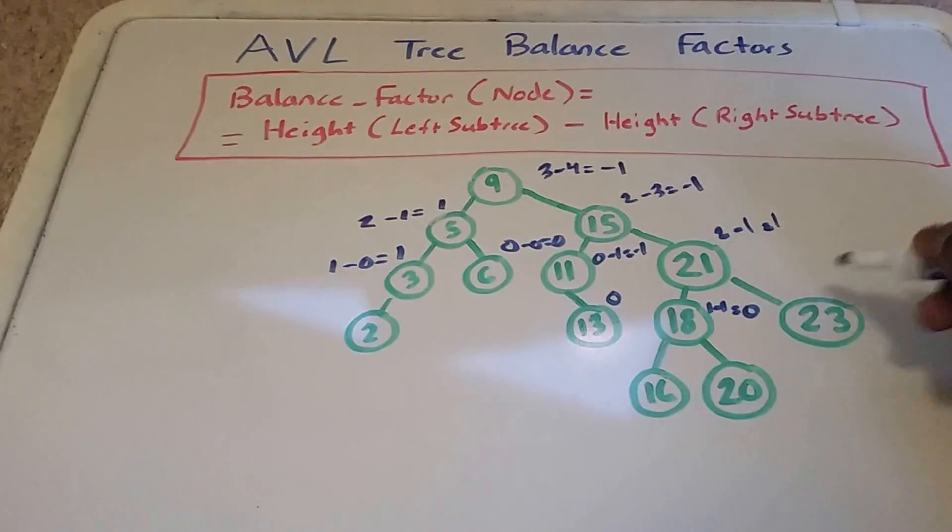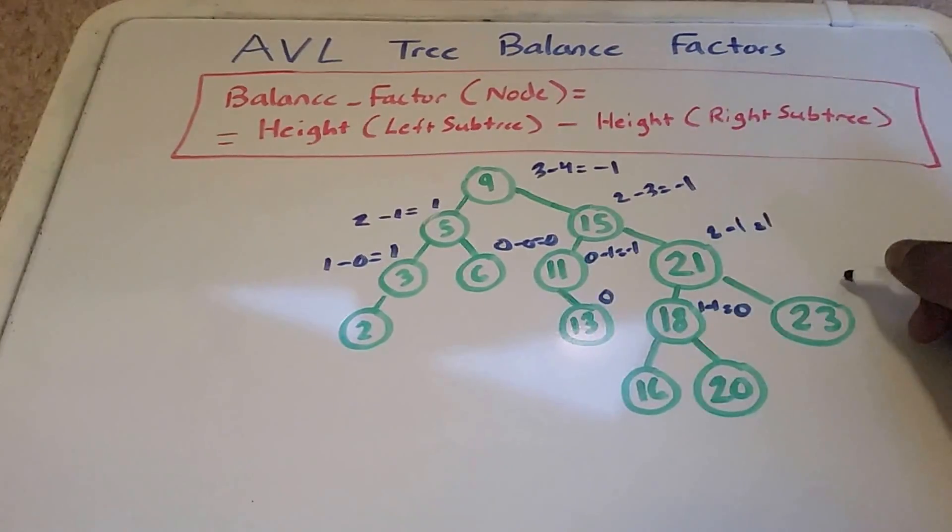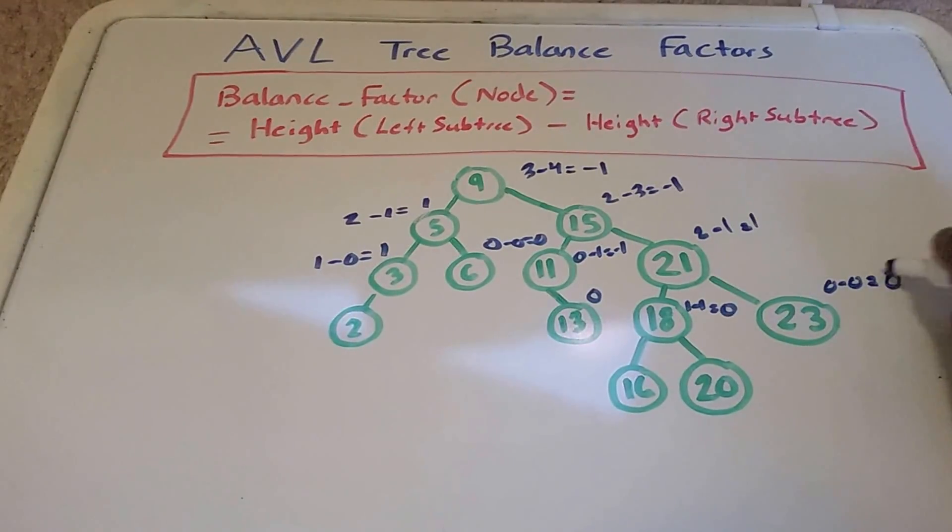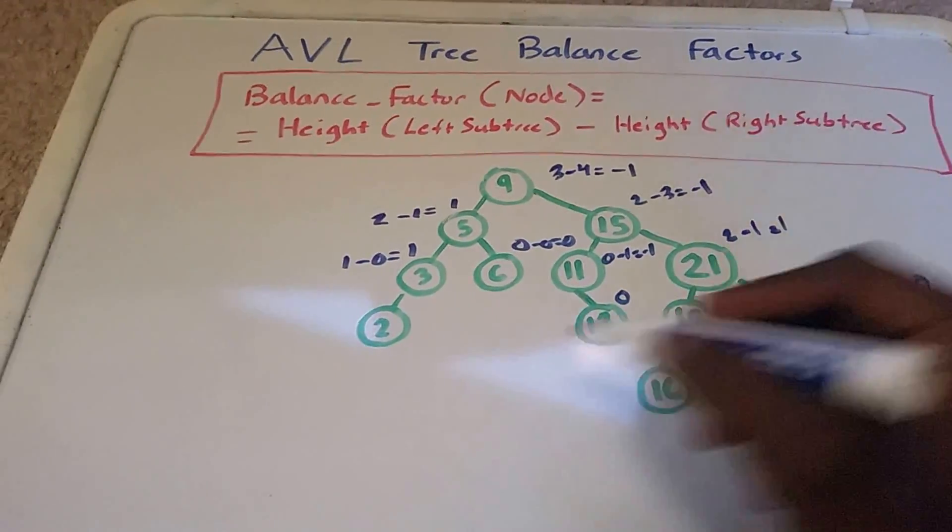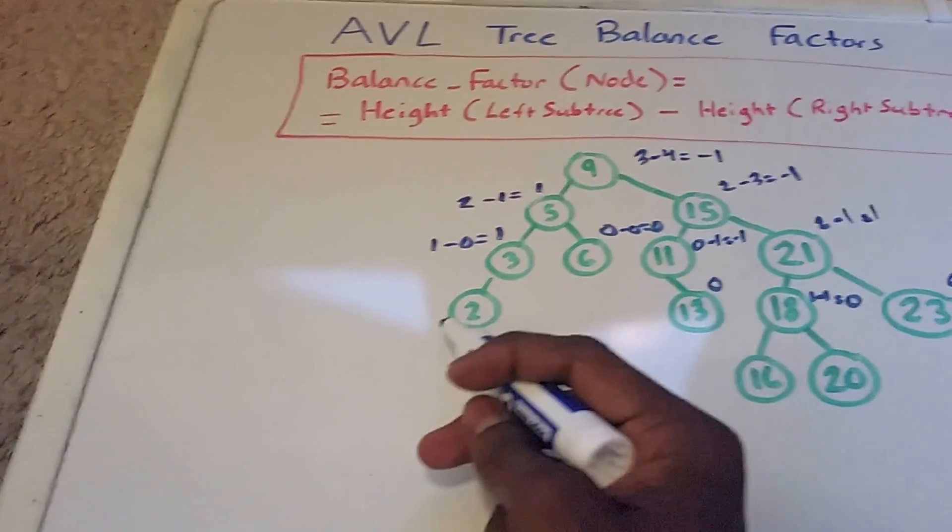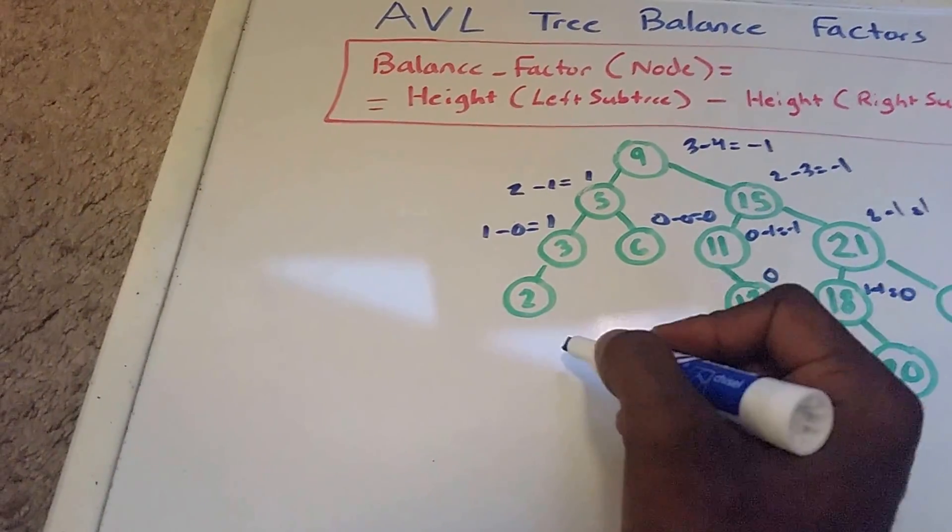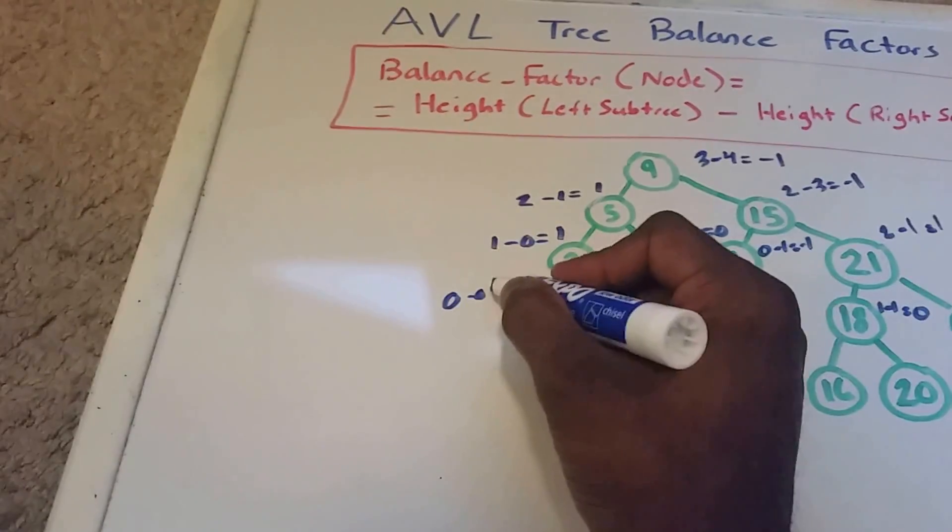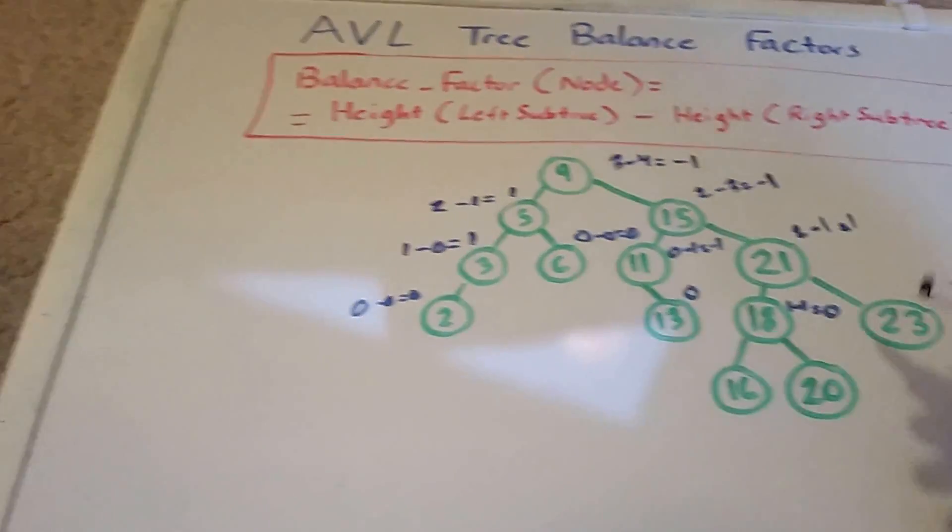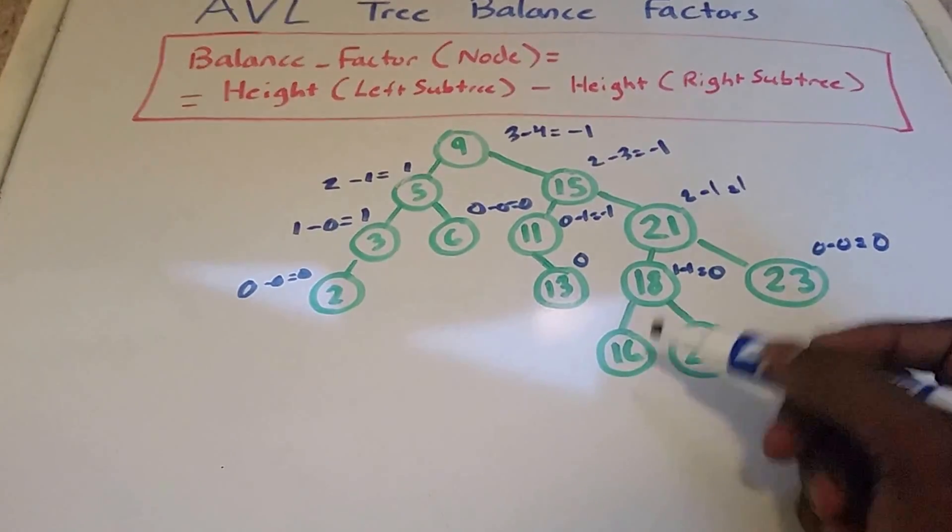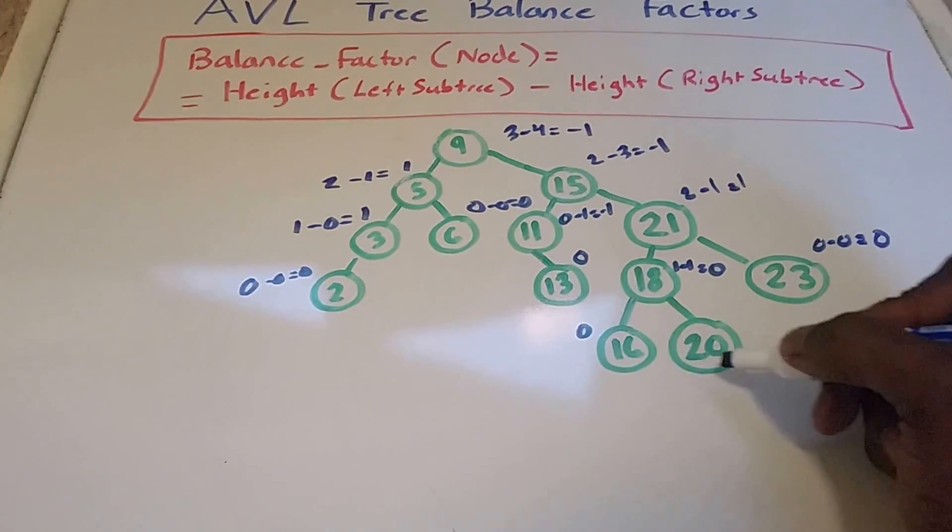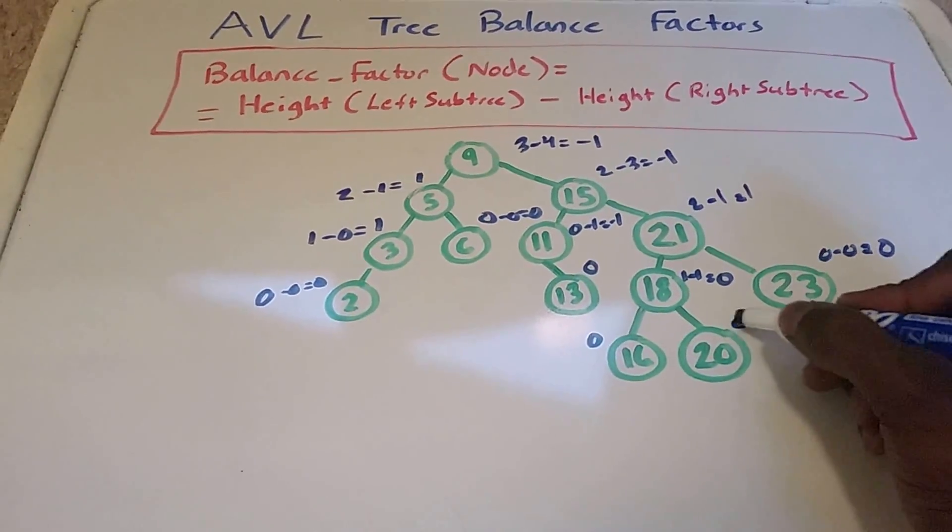And then here on 23, we have nothing on the left, nothing on the right. So we have 0 minus 0, which equals 0 balance factor there. And let's see, 2 also has nothing on the left and nothing on the right, so it too has a balance factor of 0 minus 0, which equals 0. So 16 here also has a balance factor of 0. I think you guys got the idea now. And 20 also has a balance factor of 0.